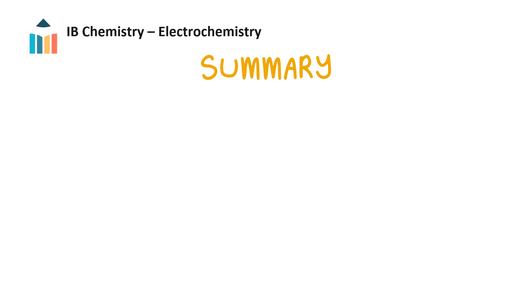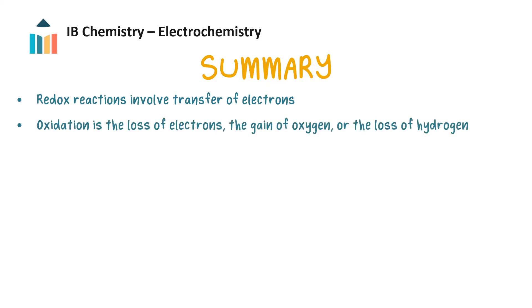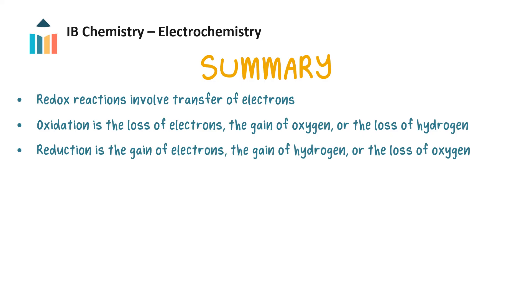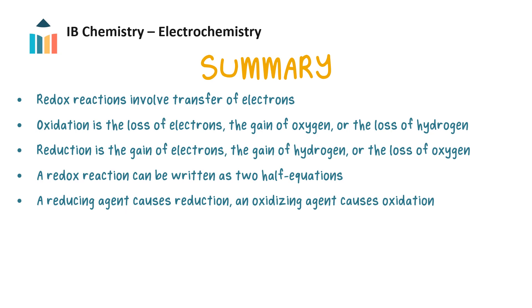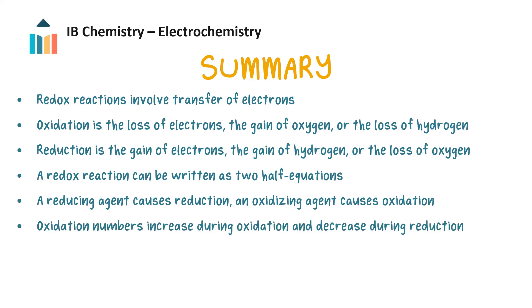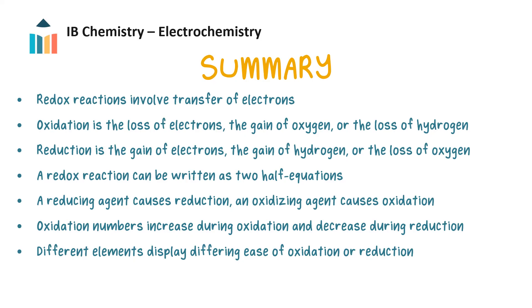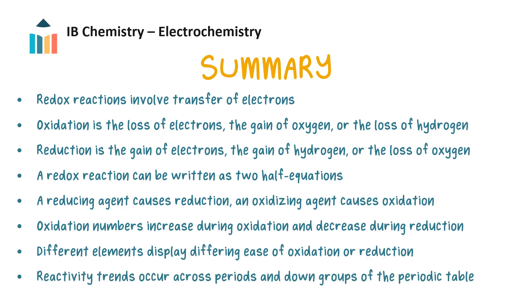It's time to summarize the main points. Redox reactions involve the transfer of electrons. Oxidation is the loss of electrons, the gain of oxygen, or the loss of hydrogen. Reduction is the gain of electrons, the gain of hydrogen, or the loss of oxygen. A redox reaction can be written as two half equations — an oxidation and a reduction half equation. A reducing agent causes reduction of another species, and an oxidizing agent causes oxidation of another species. Oxidation numbers increase during oxidation and decrease during reduction. Different elements display differing ease of oxidation or reduction, and finally, reactivity trends occur across periods and down groups of the periodic table.